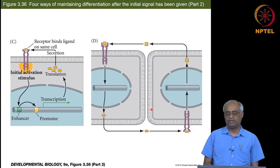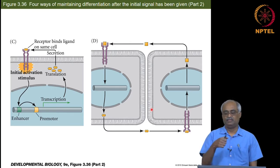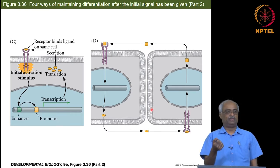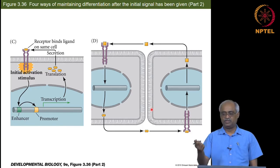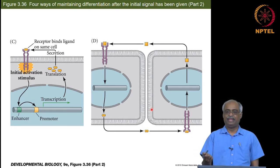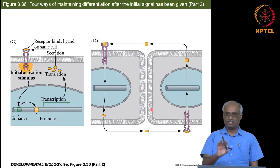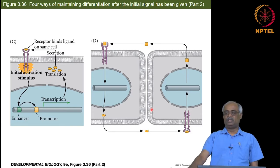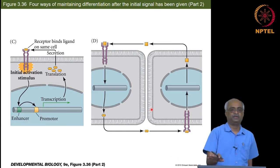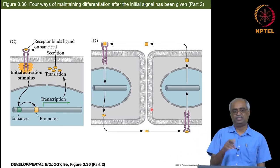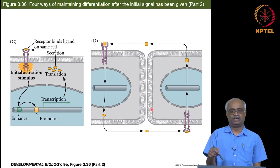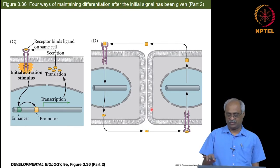For example, in the C. elegans germ cell niche, the somatic cell that produces the Delta ligand and the germ cell that produces the Notch receptor need to continuously signal each other. If you get rid of the niche cell — meaning you get rid of Delta — these cells will right away differentiate and will not remain in their mitotic potential. So there are situations where the adjacent cell producing ligand is required.